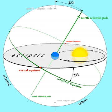Obliquity of the ecliptic. Obliquity of the ecliptic is the term used by astronomers for the inclination of Earth's equator with respect to the ecliptic, or of Earth's rotation axis to a perpendicular to the ecliptic.